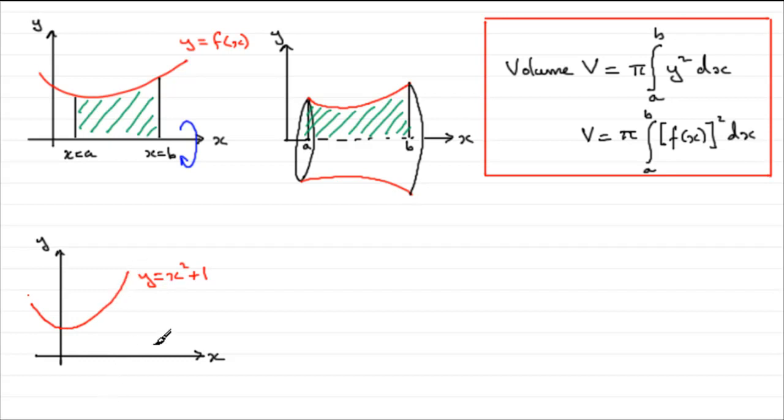And suppose we're asked to find the volume of revolution between two lines, x equals 1, x equals 3, say. For this graph, this area here, which is bounded by the graph and the x axis and the lines x equals 1 and x equals 3.